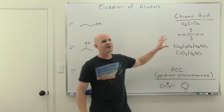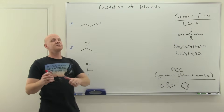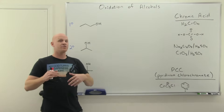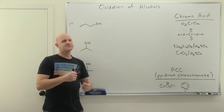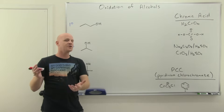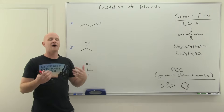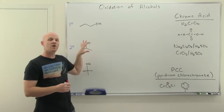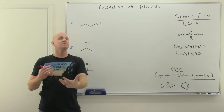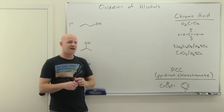Before we talk about the reagents involved in oxidation, I just want to talk about what oxidation is again. We talked about it earlier in this chapter, and we actually talked about the reduction, the exact opposite reaction. We reduced ketones and aldehydes with our hydride reagents to make alcohols. Now we're going to be doing the exact opposite — starting with alcohols and oxidizing them to form ketones, aldehydes, as well as carboxylic acids.